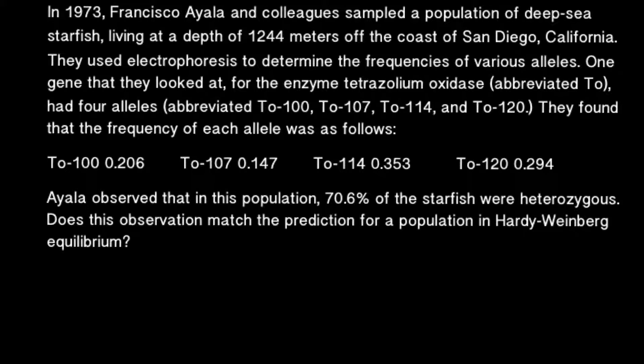Hello and welcome to Nikolai's genetics lessons. In this video I'm going to talk about population genetics. What is unusual about today's problem is that we have four alleles, and we are going to use the Hardy-Weinberg formula in order to solve this problem.